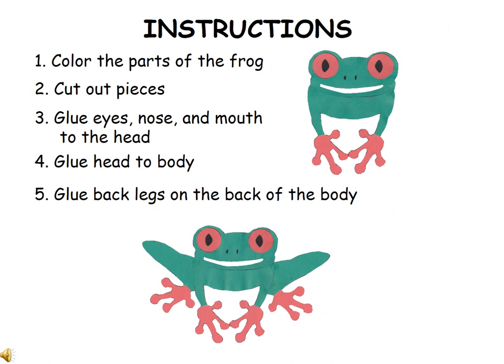Here are the instructions to put your tree frog together. You can color the frog first using paint, markers, or crayons. Cut out all the pieces. Glue the eyes, nose, and mouth to the head — or you may wish to just draw on the nose and mouth. Glue the head to the body, then attach the back legs to the back of the body, and you have created your tree frog.